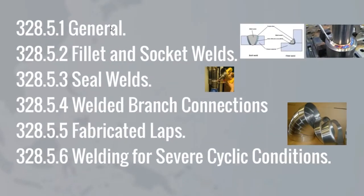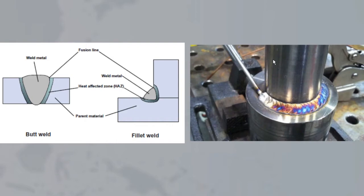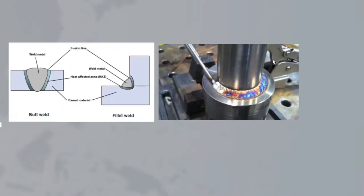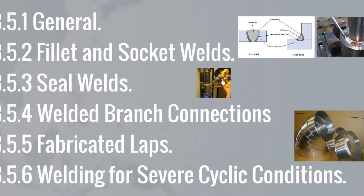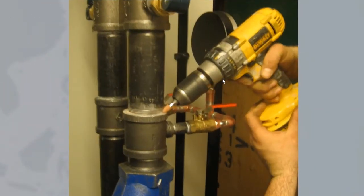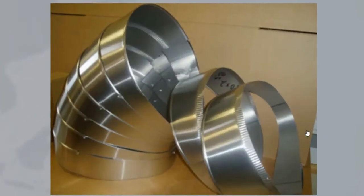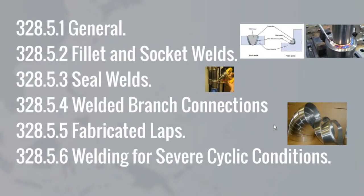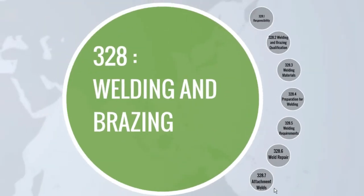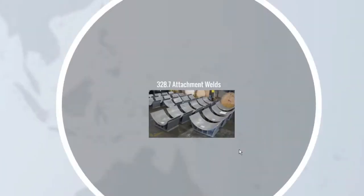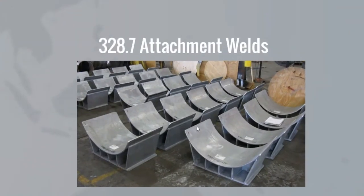Welding requirements in general, fillet and socket welds, seal welds, welded branch connections, fabricated laps, and welding for severe cyclic conditions are elaborated in subparagraph 328.5, titled Welding Requirements. Detailed requirements of repair welds are presented in subparagraph 328.6, titled Weld Repair. Detailed requirements of attachment welds are presented in subparagraph 328.7.